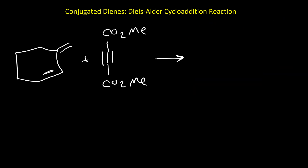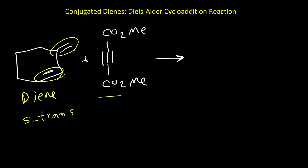Here is another example. We want to know what the product is. Looking at this diene, we can see it has an S-trans conformation, and because it is a cyclic compound, we cannot rotate this bond to convert to the S-cis conformation. So the answer for this reaction is no reaction — there is no Diels-Alder reaction for a locked S-trans conjugated diene.